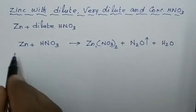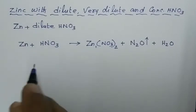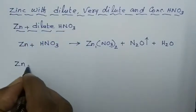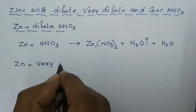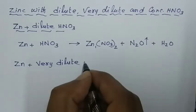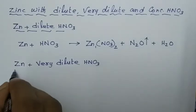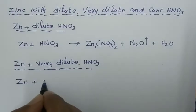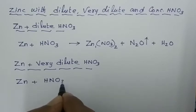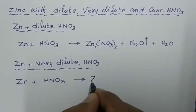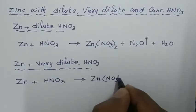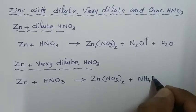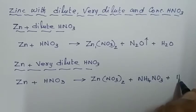The balancing of the dilute nitric acid and very dilute nitric acid reactions is the same. Now, how does zinc react with very dilute nitric acid? Zn plus very dilute HNO3 gives zinc nitrate Zn(NO3)2 — same first product — but this product changes to ammonium nitrate. As like magnesium, zinc also gives ammonium nitrate.